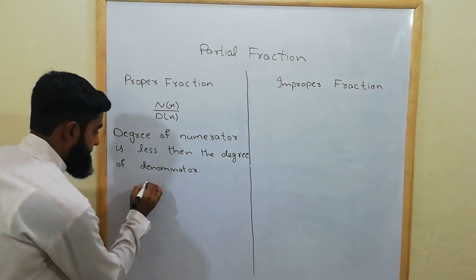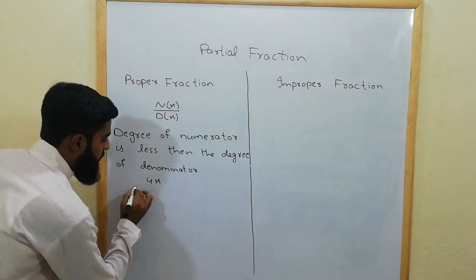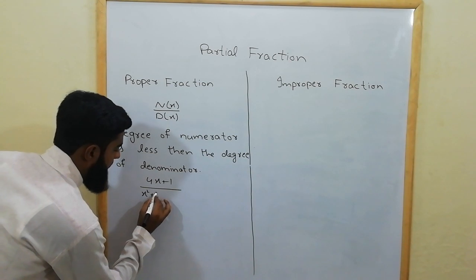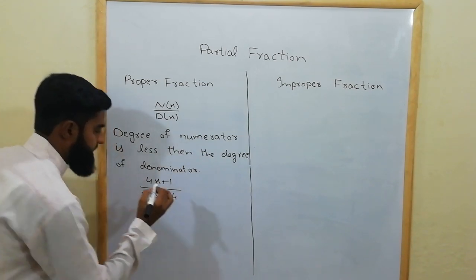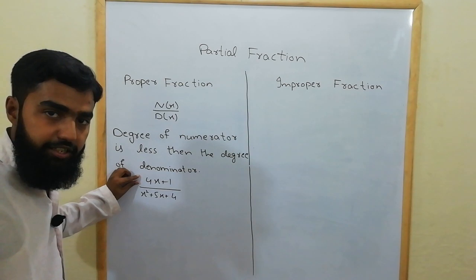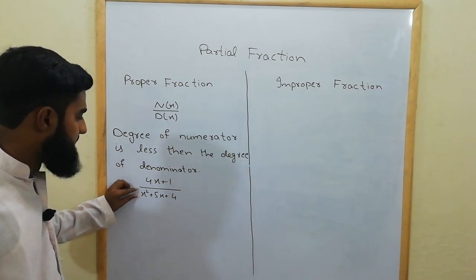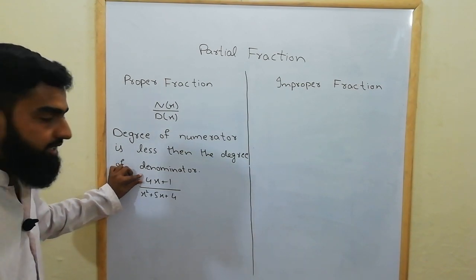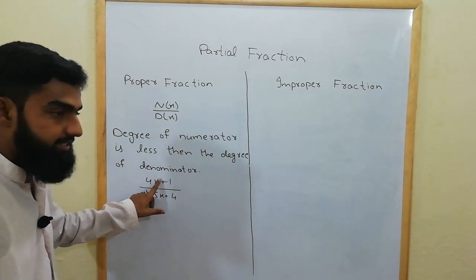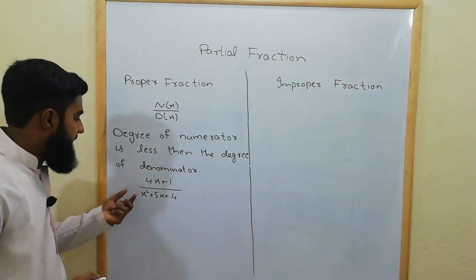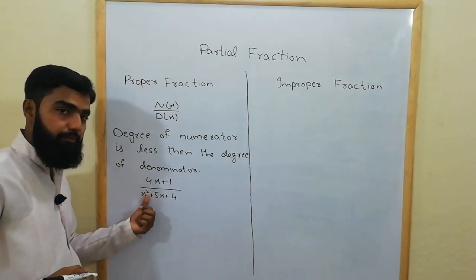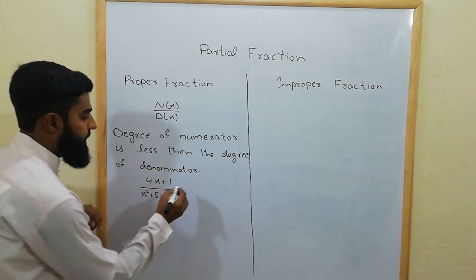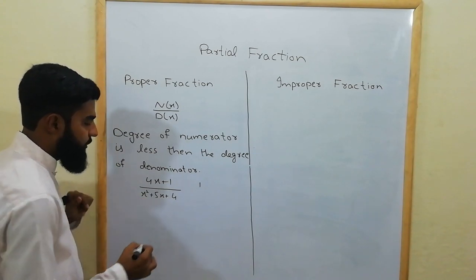For example, (4x + 1) over (x² + 5x + 4). Here 4x + 1 is the numerator and x² + 5x + 4 is the denominator. The degree of the numerator is 1 and the degree of the denominator is 2. Since 1 is less than 2, this is a proper rational fraction.